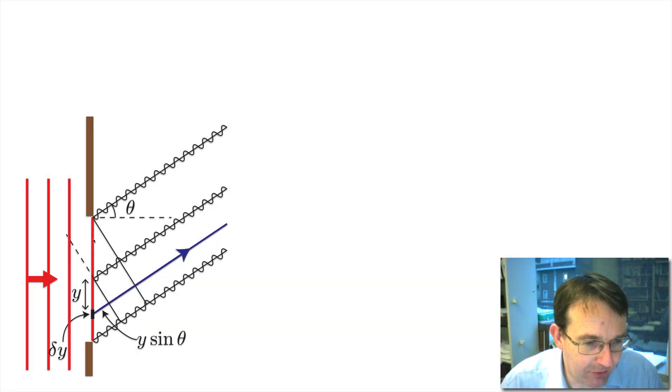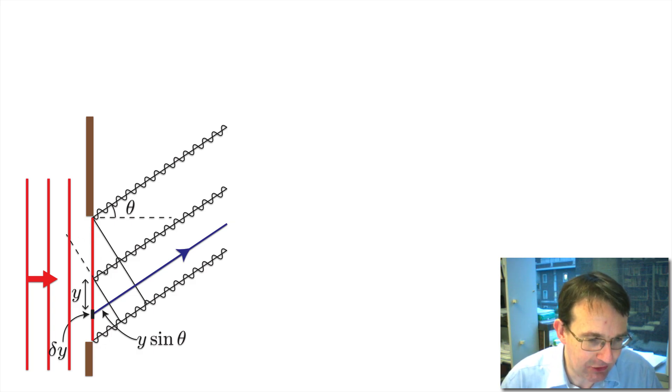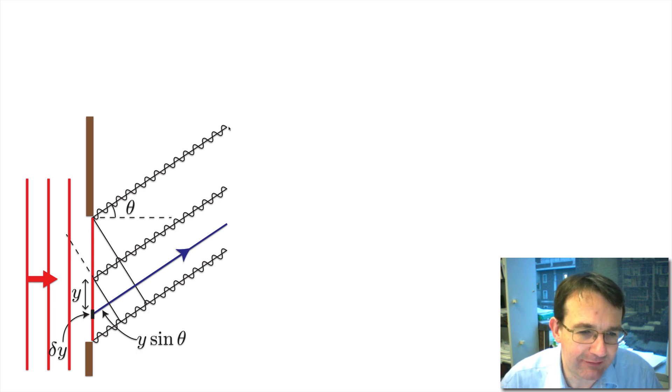So instead we're going to look at what's called Fraunhofer diffraction — the diffraction pattern you get when you are a long way from the slit. If we look a long way from the slit, we can make the approximation that the rays of light are approximately parallel, and that really simplifies the maths. Let's start off by having a look at the maths behind diffraction from a single slit.